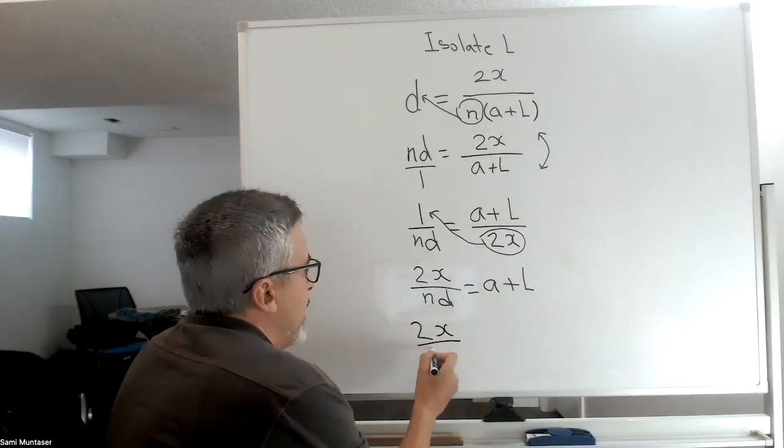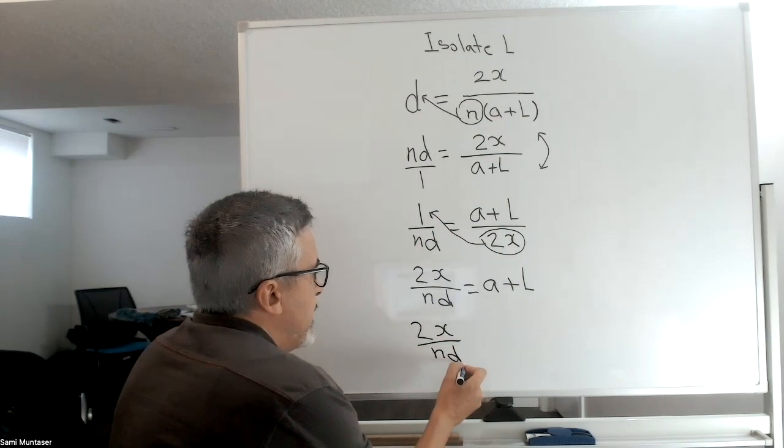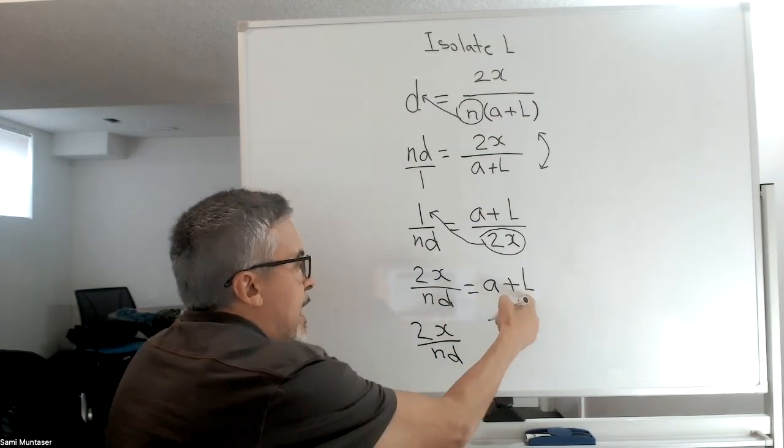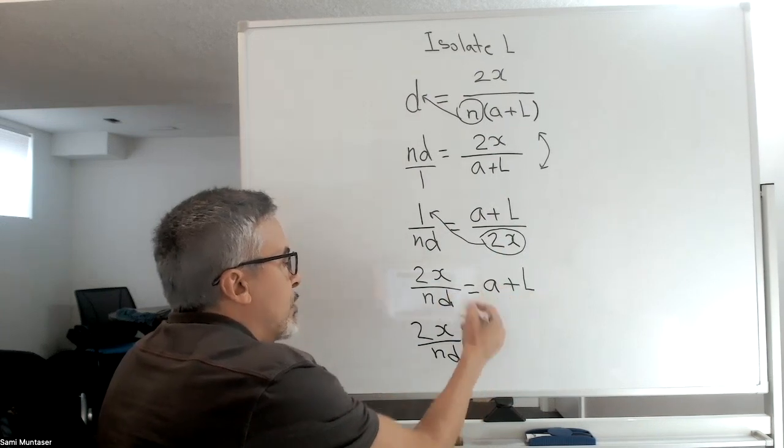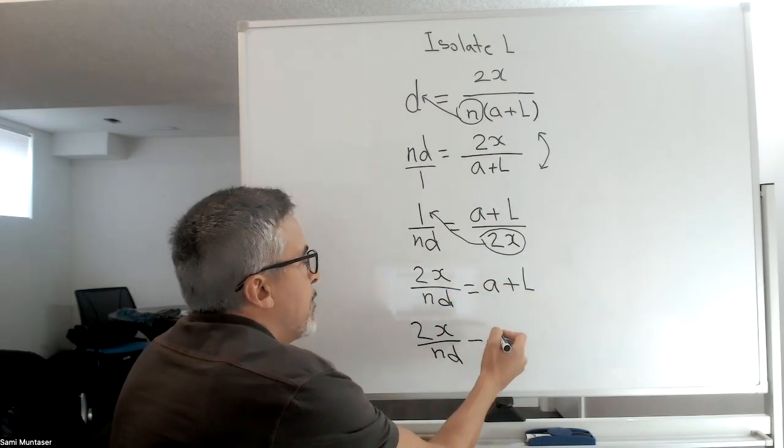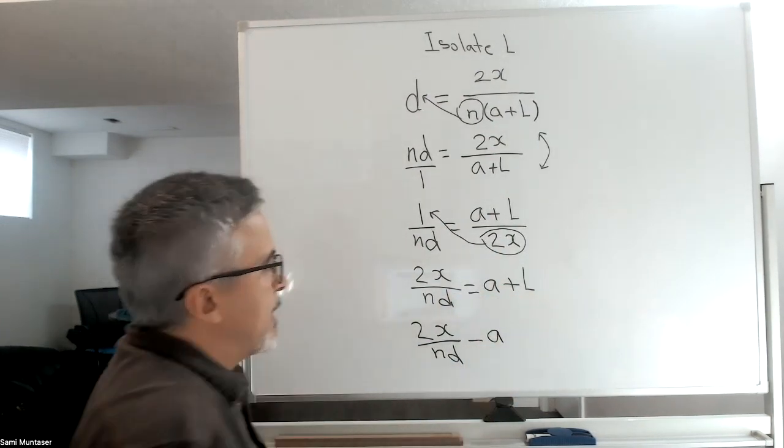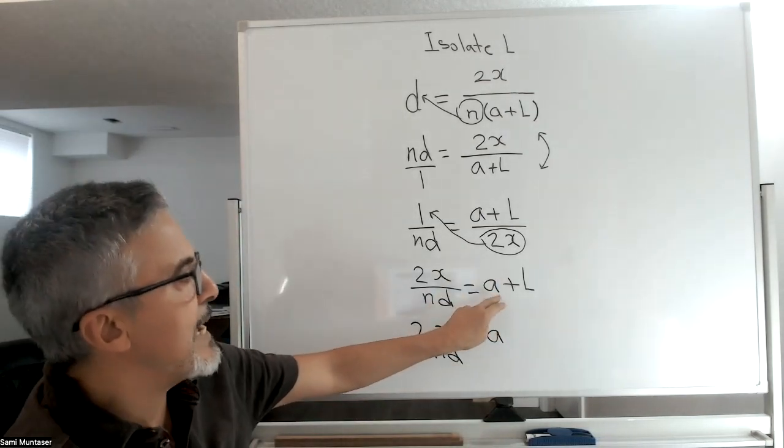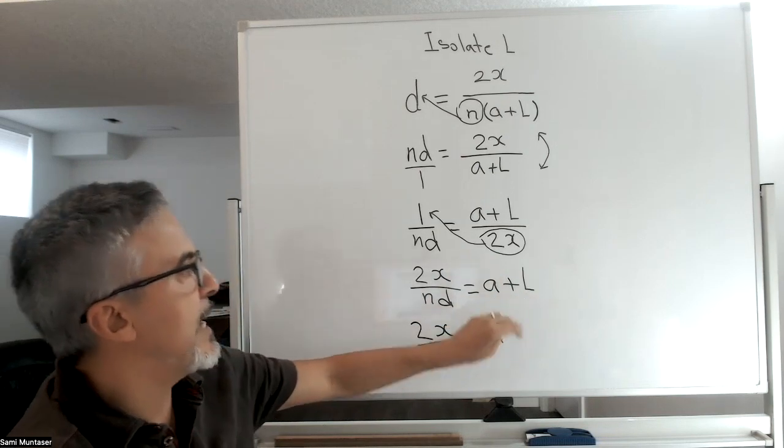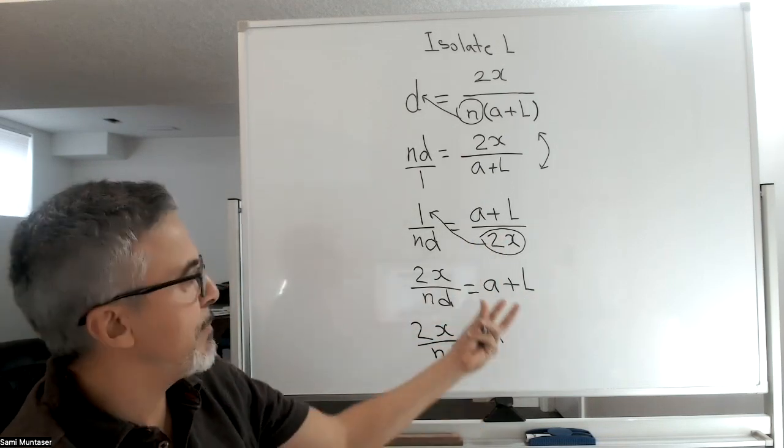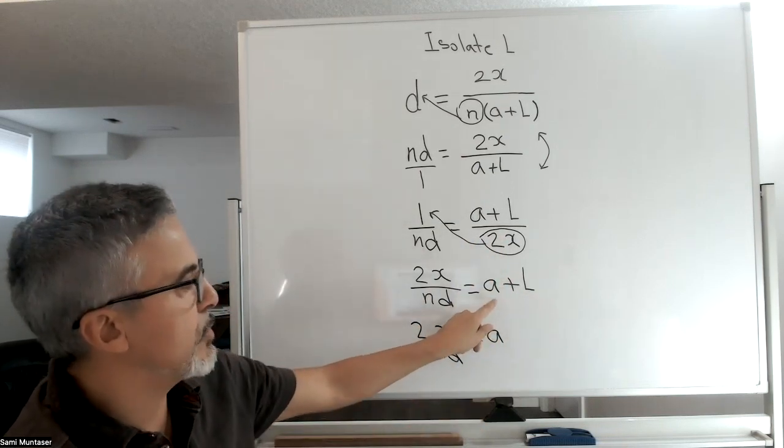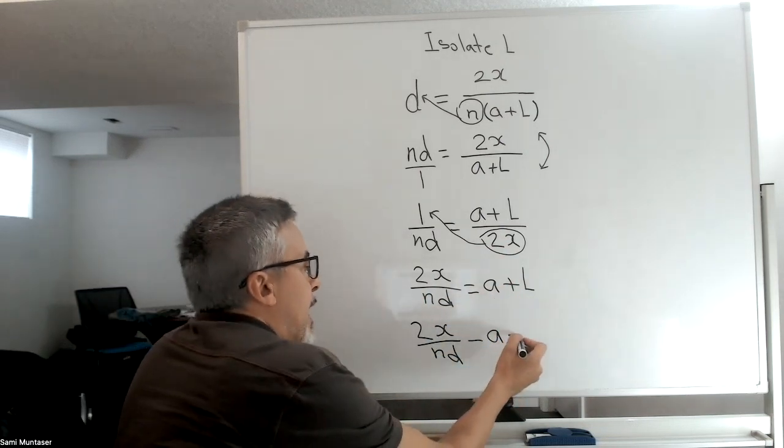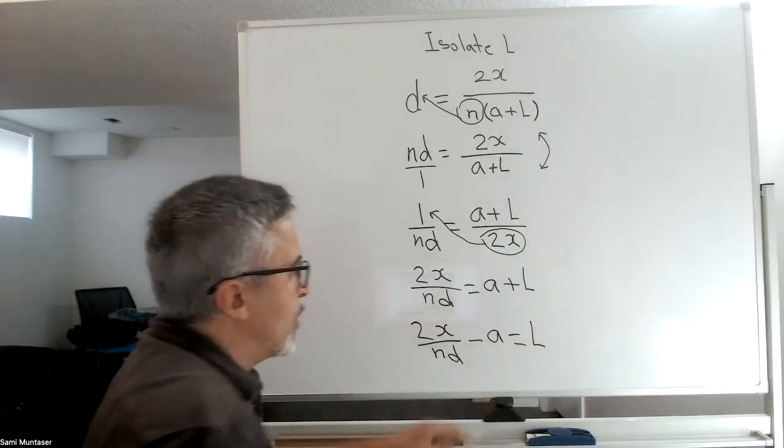Now algebraically we could just write 2x over nd and I'm going to move this a to the other side of the equal sign. But this is a plus L, so when the a moves to the other side it becomes minus a. Some people say why don't we cross multiply the a into here? No, you can't because the a here is a plus L. The relationship here when you want to move it to the other side, you're going to subtract it, and then that gives you L.